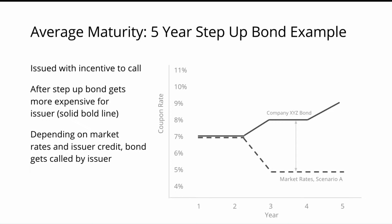First of all, these early call dates — these early call options that the issuer has — reduce interest rate sensitivity. One has to be aware that the average maturity, quite similar to duration, is the number that is supposed to tell you something about the interest rate sensitivity of a bond. If a bond has an early call option for the issuer, that will in general lower the interest rate sensitivity of the bond. This is something quite difficult to implement into the standard calculations of duration or average maturity.